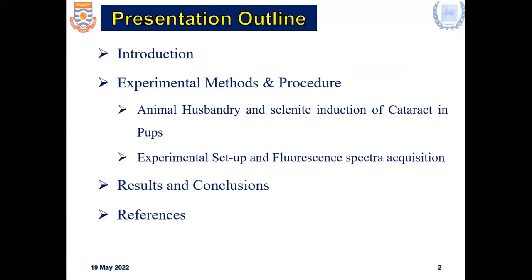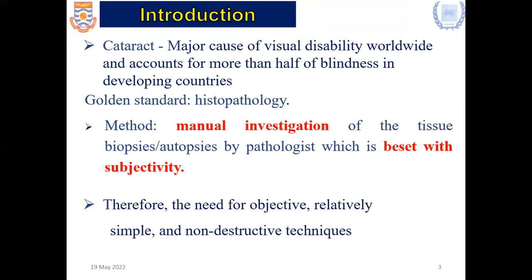The outline covers introduction, materials and procedure, results, and conclusions. Cataract, as we all know, is a major cause of visual disability globally, accounts for more than half of blindness in developing countries, and it increases absorption and significantly decreases vision over time. Cataracts have been projected to increase globally due to the increase in our aging population.